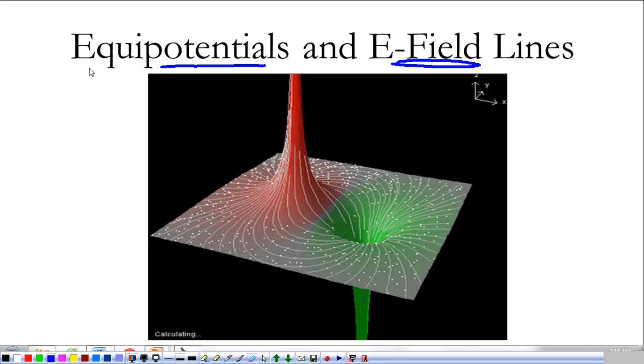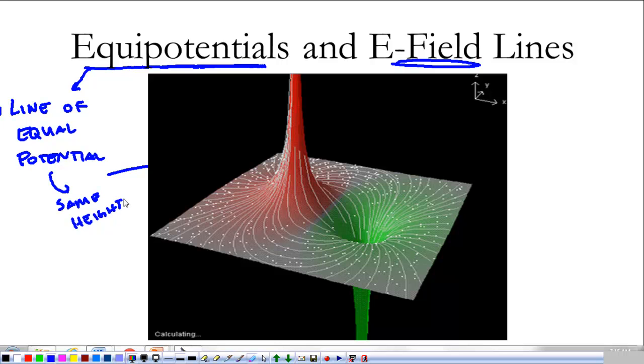That's what an electric field line is. An equipotential, on the other hand, is a line of equal potential. It's kind of nice that that word means exactly what it says. So for this graph over here, what that means essentially is that we are at the same height when we're at an equipotential. So an equipotential line would be sort of here.